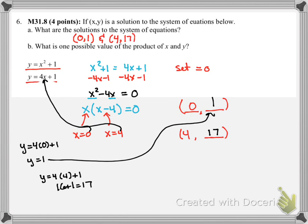For Part B, what is one possible product? Product is just multiplication, so that means X times Y. The first one's pretty easy: 0 times 1 equals 0. That's one possible answer.